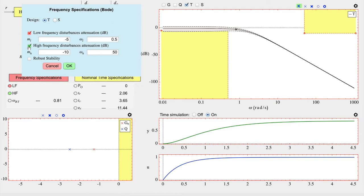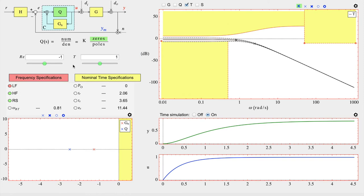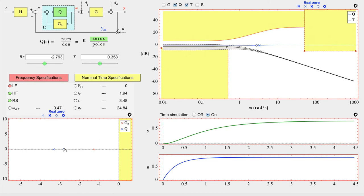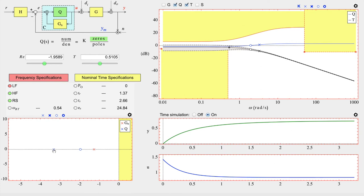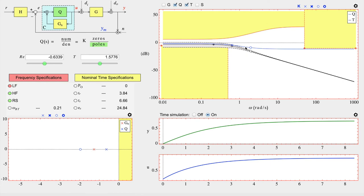Once this has been done, over the Bode plot appear different forbidden regions colored in yellow and the region covered by the complementary sensitivity region gray. Once this point is reached, the design consists of trying to place the gray area out of the yellow ones. For this, it is necessary to select the poles, zeros and gain of the Q filter. Since the application automatically shows the effect of the variations in Q on the closed-loop system, it is possible to interact with the design until obtaining the desired behavior. Clearly, it is not always possible to meet the specifications made.